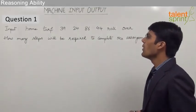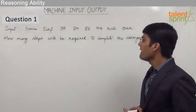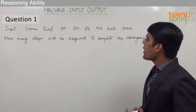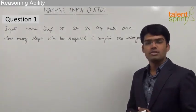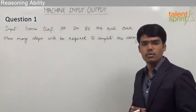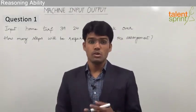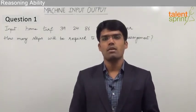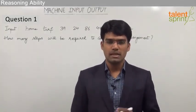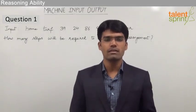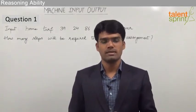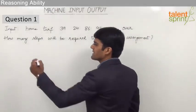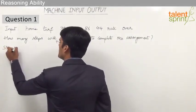The input is: home turf 39 24 86 44 roll over. The question is how many steps will be required to complete the arrangement. We need to do the arrangement for the given input and find out the number of steps required. Our desired output is to get the words and numbers in alternate positions, starting with numbers first, with numbers in decreasing order and words in alphabetical order.